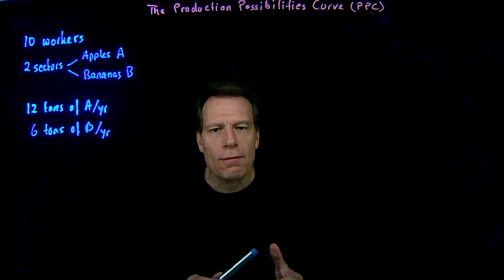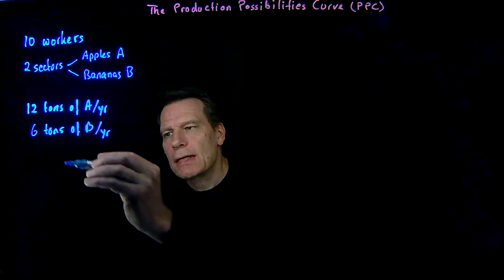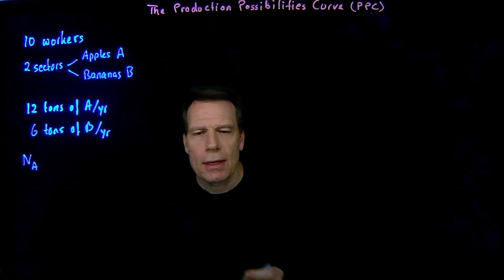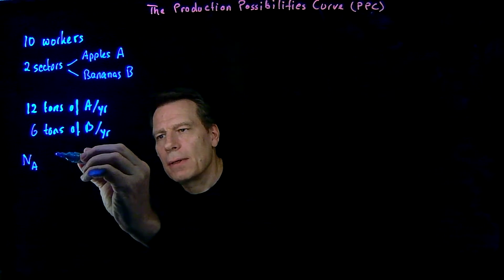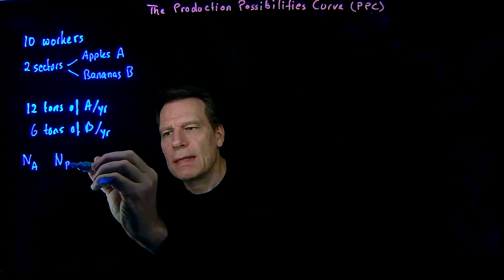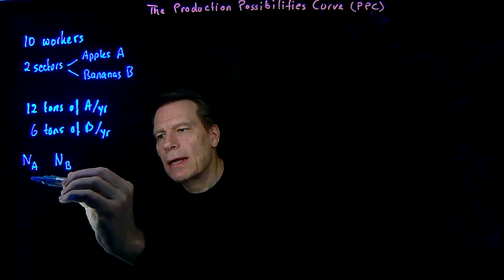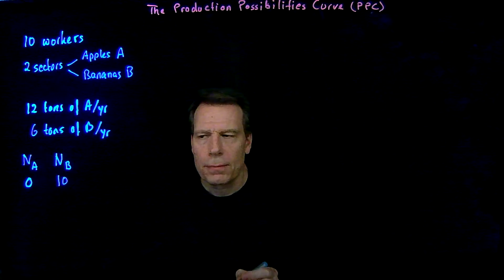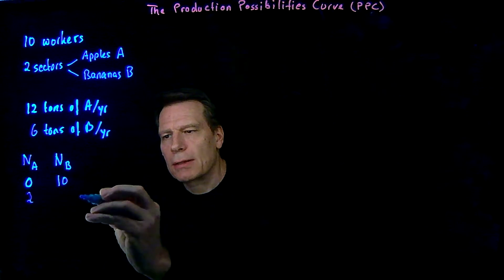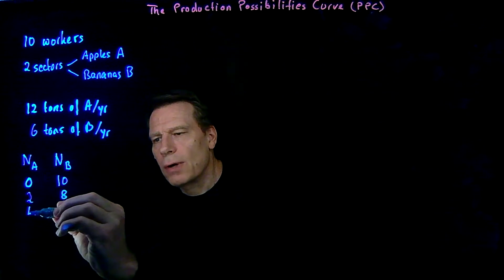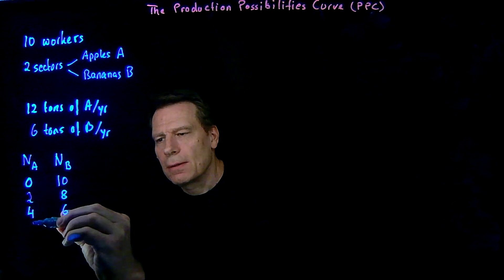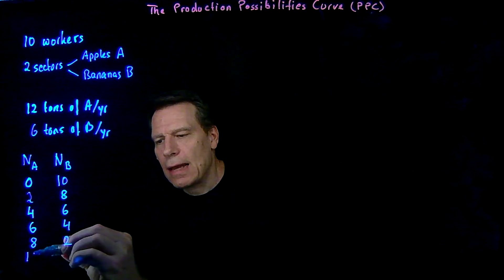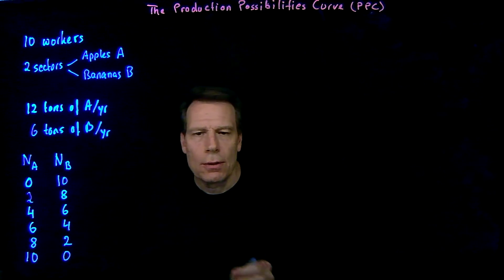We can now illustrate the various production possibilities in this economy by creating a simple table. In that table, we'll have a column representing the number of workers allocated to the apple sector and another column illustrating the number of workers allocated to the banana sector. So if we allocate no workers to the apple sector, we'd be allocating all 10 workers to the banana sector. If we allocated 2 workers to apples, we'd have 8 left for bananas. 4 in apples means 6 in bananas, 6 in apples means 4 in bananas, 8 in apples means 2 in bananas, and 10 in apples means no workers left to produce bananas.